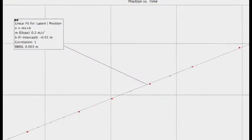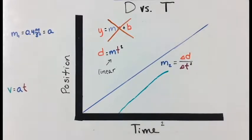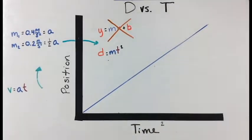The slope from our data was 0.2 meters per second squared. This value is half of the acceleration we found in our previous graph. This gives us our second kinematic equation, which is position equals one half the acceleration multiplied by the time squared.